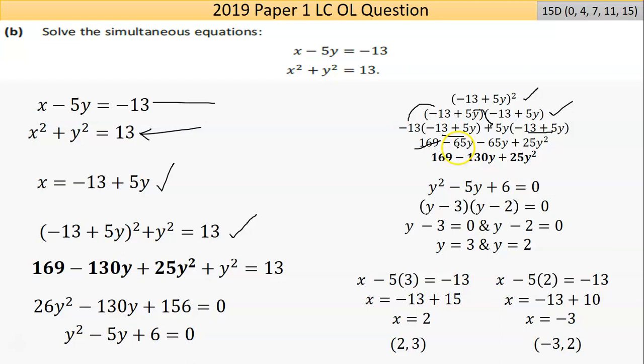Then I go left to right and do it. Negative 13 times negative 13 is positive 169. Negative 13 by 5y is negative 65y. 5y by negative 13 is also negative 65y. And 5y by 5y is 25y². If I simplify this, I can only do it by adding the y's: minus 65y take away 65y is negative 130y. This expression in bold I can now bring back into the bigger workings.